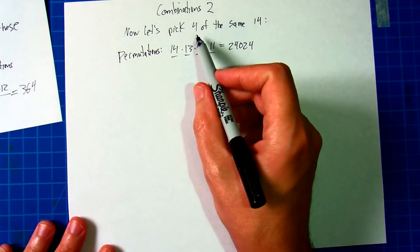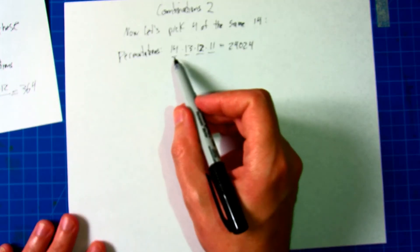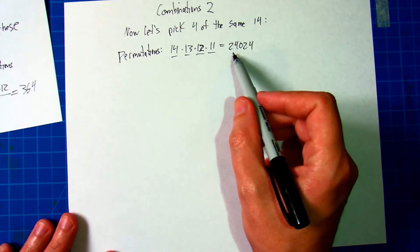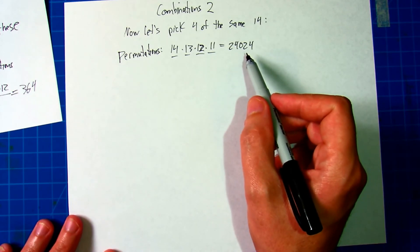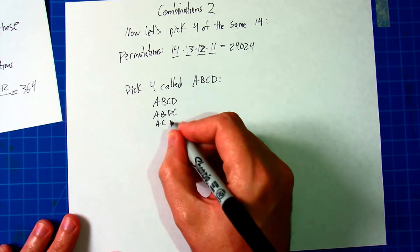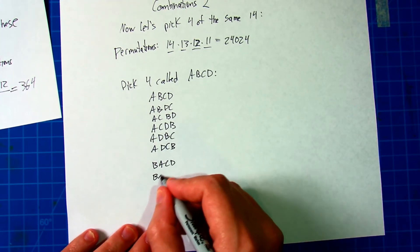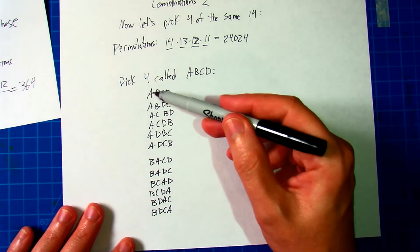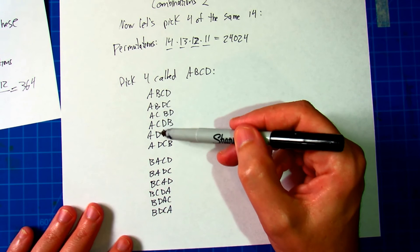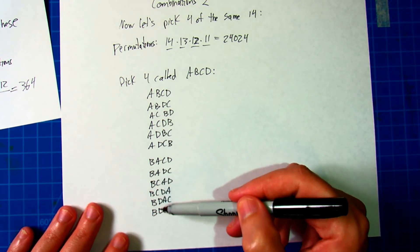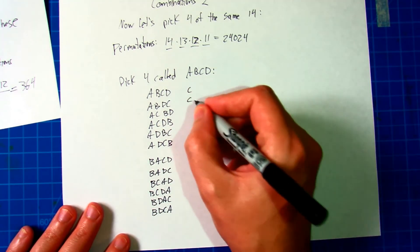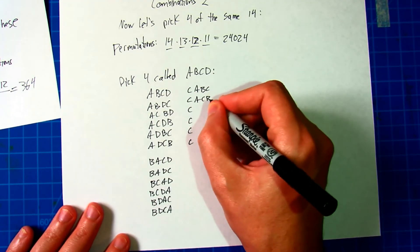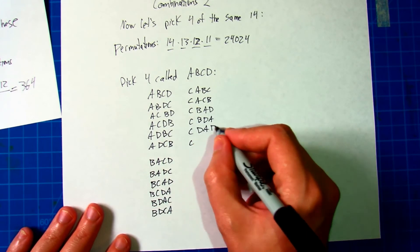The number of permutations of four objects out of 14 is 14 choices for the first one times 13 for the second times 12 for the third times 11 for the fourth. Gives you a total of 24,024 total permutations. It's not very difficult to see what I'm doing here because all of these start with A and then they start with B or C or D. All of these start with B and then I put A, C, and D separately. So I could do the same thing, start them all with C, then all that start with D.